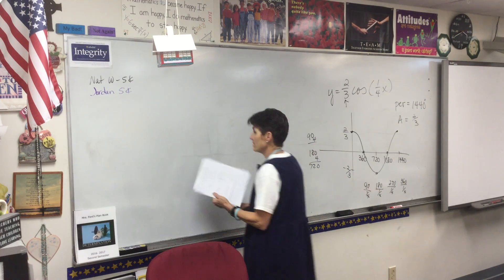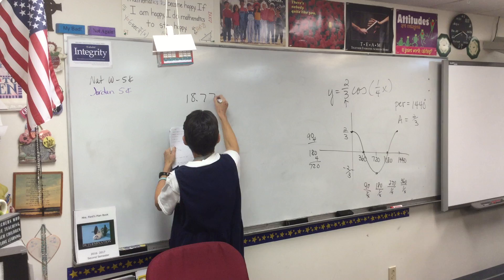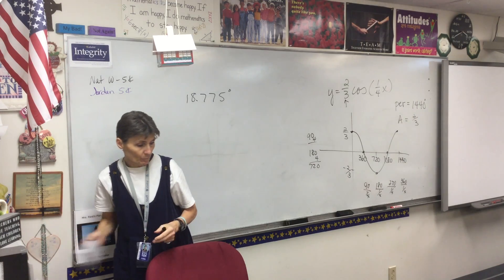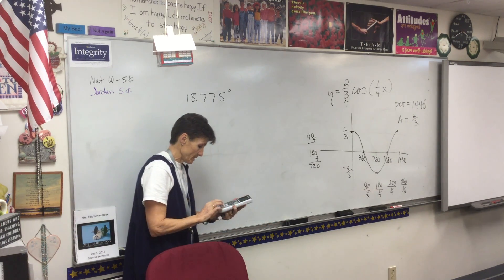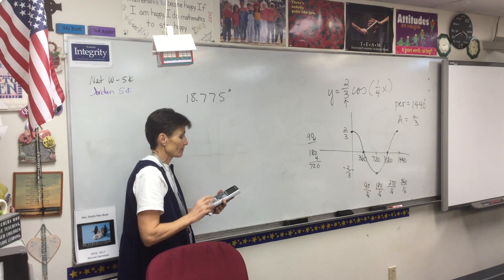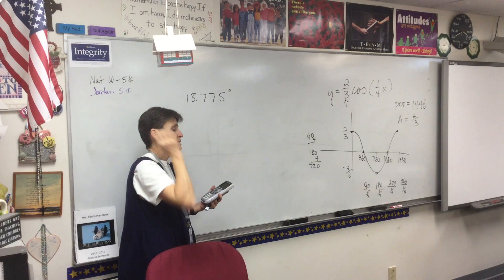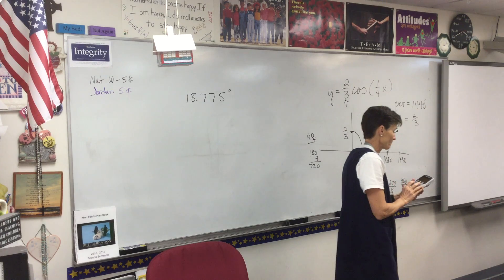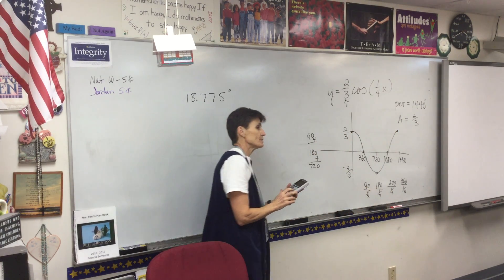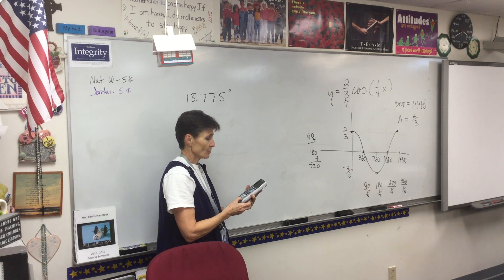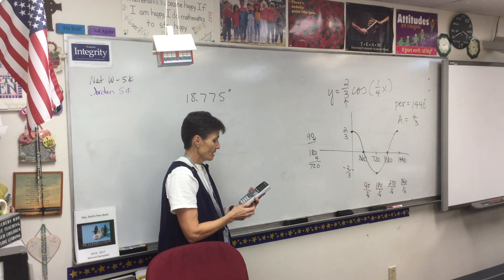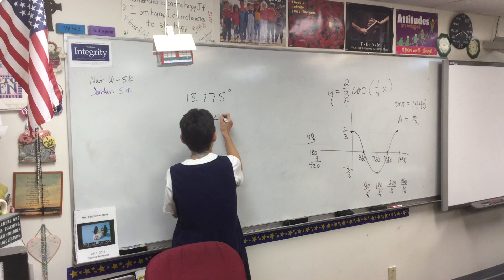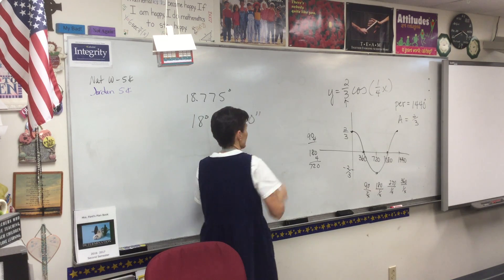We haven't talked about this since we did it in our notes back before Christmas. So we're going to take our calculator and we're going to type in 18.775. And as soon as we get that typed in, we go into our angle menu, second apps, and we click down to DMS, degrees, minutes, seconds. Press enter a couple of times, and it says 18 degrees, 46 minutes, and 30 seconds.